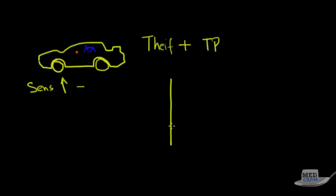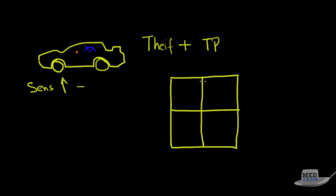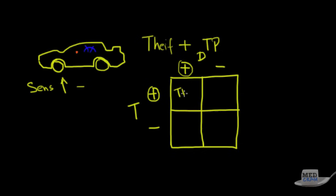You can break this up into a square with four possibilities. In terms of disease, you could have a positive or negative disease, and in terms of the test, the alarm can be going off or not. If there's a thief and the alarm goes off, that's a true positive. If there wasn't a thief but the alarm went off — like a motorcycle going by — that would be a false positive, and no one's tried to break in.